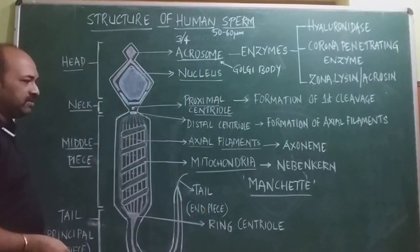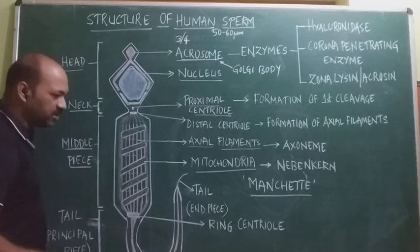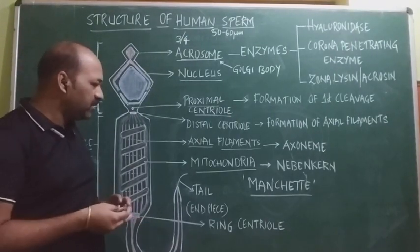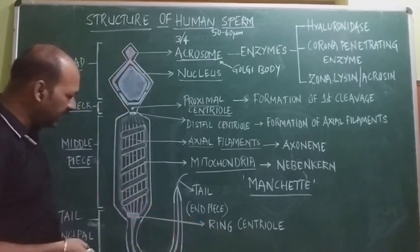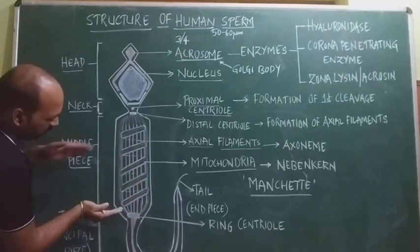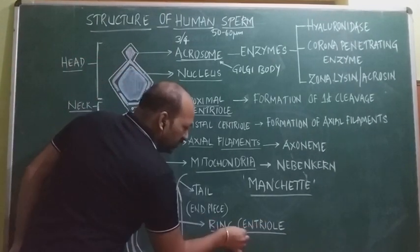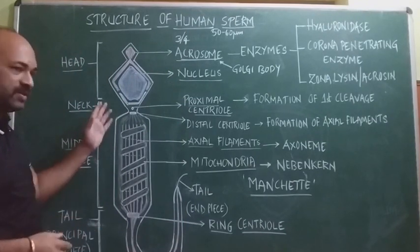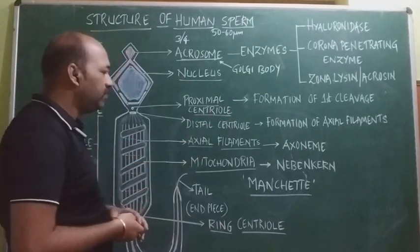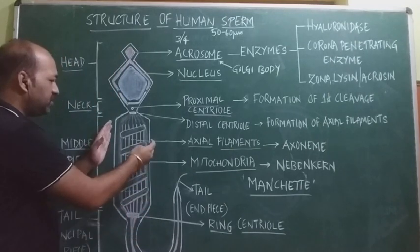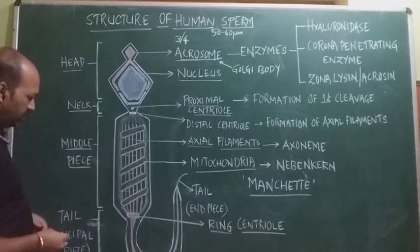At the lower part of the middle piece there is another centriole called the ring centriole. The ring centriole acts as a barrier between the middle piece and the principal piece of the tail, thereby giving stability to the sperm. The middle piece, as it consists of the axoneme and mitochondria, provides the main structural support to the sperm.